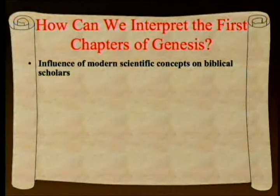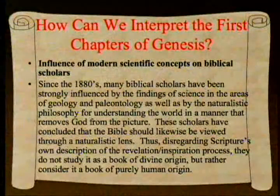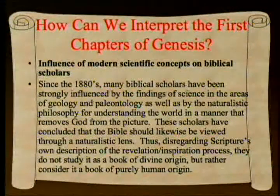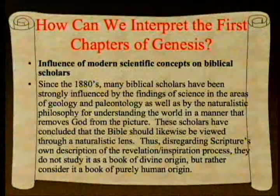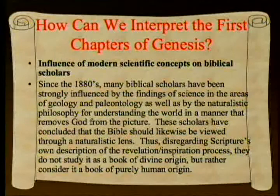He then discusses what you do when you accept this view of science. Since the 1880s, many biblical scholars have been strongly influenced by findings in geology and paleontology, as well as the naturalistic philosophy that removes God from the picture. If you start out knowing that science is correct in this regard, then the Bible has to be basically explained away. These scholars concluded that the Bible should be viewed through a naturalistic lens—not as a book of divine origin, but rather as a book of purely human origin.